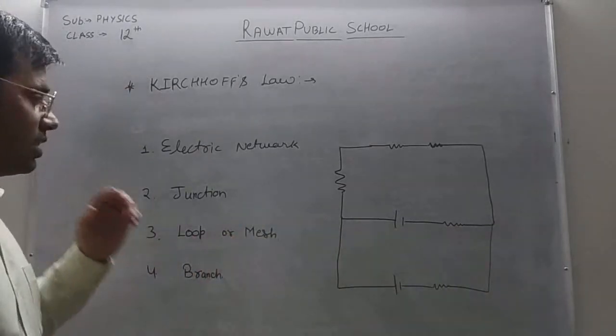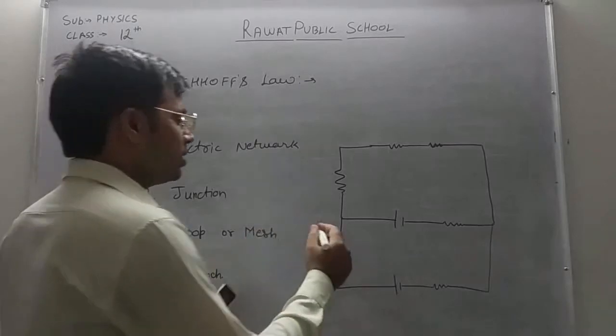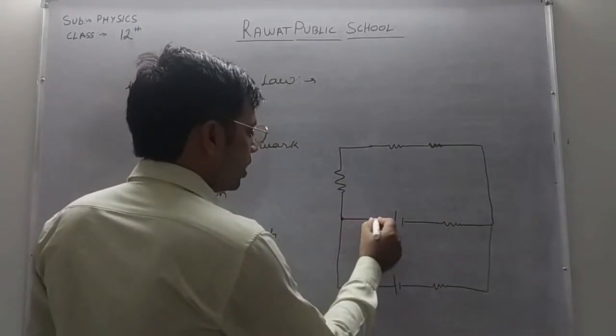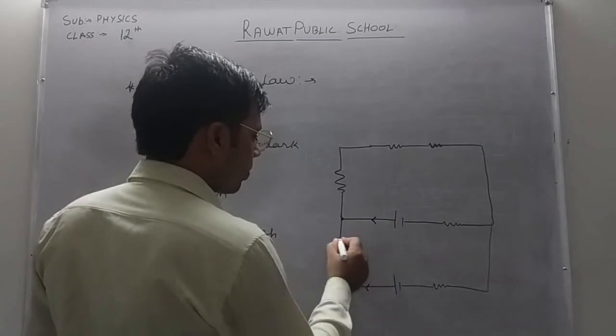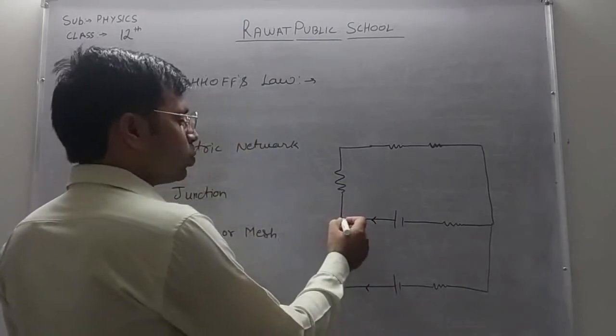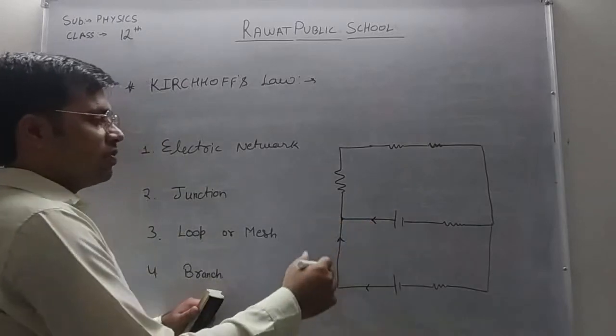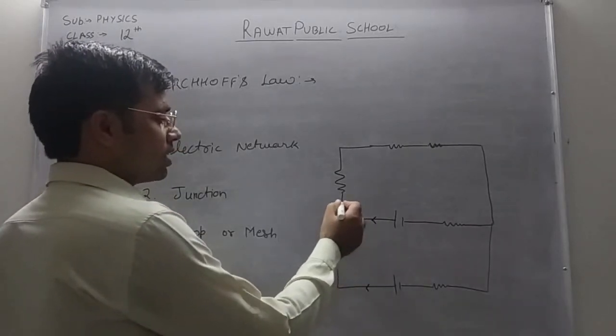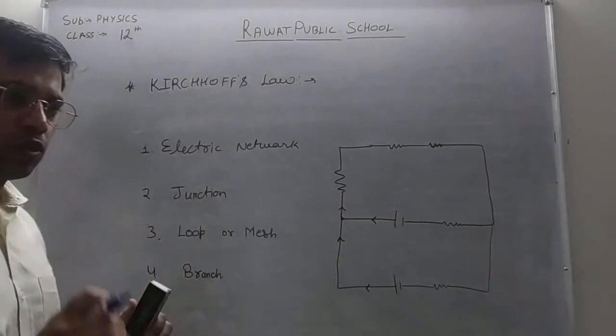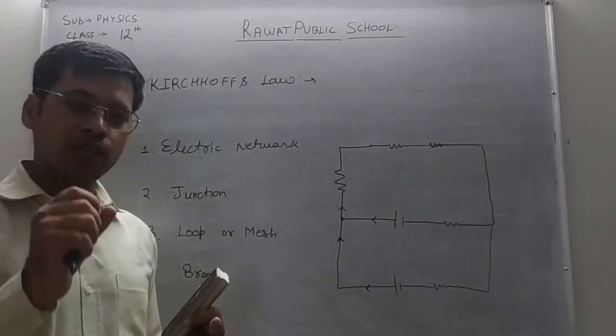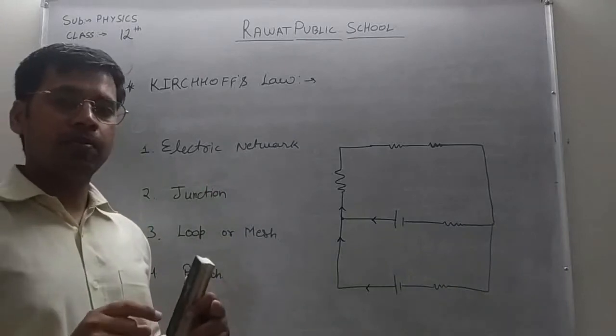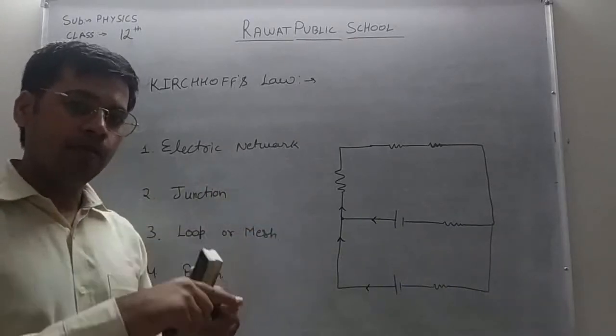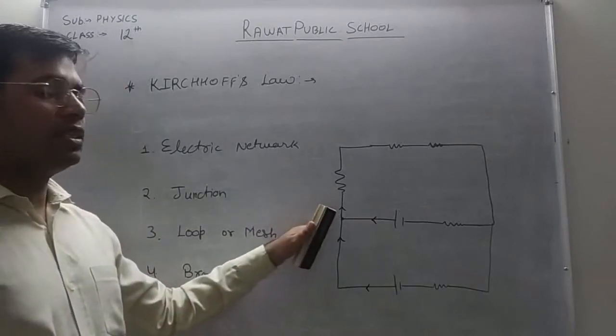Now, the other thing is junction. Junction, this is the point. Now here you can see, at this point, current from different directions are coming and meeting together here and going in the other direction. That means, we can see junction ko kya bol sakta hai, ek aisa point electrical network me, jahaan per conductors aake milti hai, jahaan per current aake milti hai. That point is known as a junction.